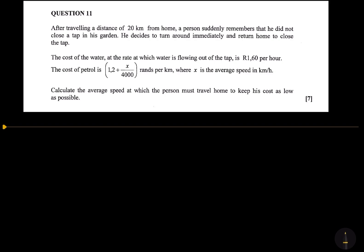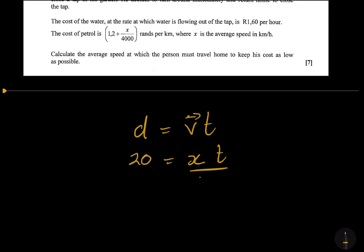Think about it. This person was traveling 20 kilometers and they said the average speed is x. For those doing physics, you know that distance equals speed multiplied by time. If we're talking about average velocity, we know the distance is 20 kilometers, the speed is x. What time would that take? You're going to divide both sides by x to determine the time. So the time would be 20 over x.